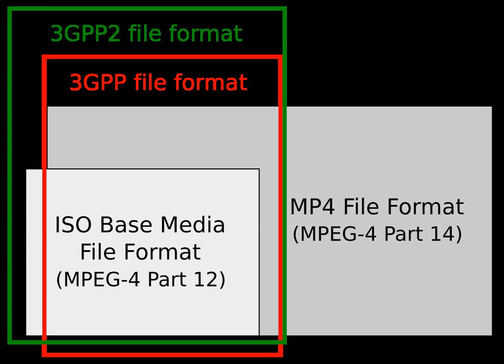ISO Base Media File Format, ISO/IEC 14496-12 MPEG-4 Part 12, defines a general structure for time-based multimedia files such as video and audio. The identical text is published as ISO/IEC 15444-12 JPEG 2000 Part 12. It is designed as a flexible, extensible format that facilitates interchange, management, editing and presentation of the media. The presentation may be local or via a network or other stream delivery mechanism. The file format is designed to be independent of any particular network protocol while enabling support for them in general. It is used as the basis for other media file formats, e.g. container formats MP4 and 3GP.